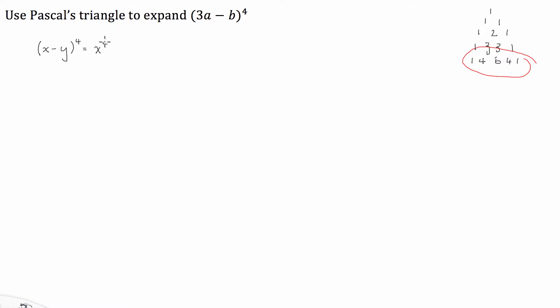So the way this works is this is going to be 1 times x to the power of 4 minus 4, which is the next term, x to the power of 3y plus 6x to the power of 2y to the power of 2, minus 4x to the power of 1y to the power of 3, plus y to the power of 4.